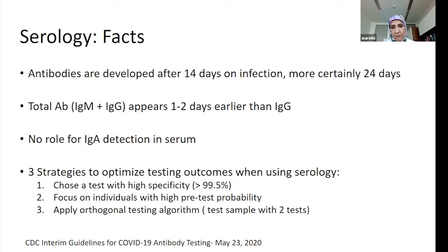Assays detecting IgA have no role to play in this disease. There are three strategies to optimize testing outcomes when using serology, as recommended by the CDC's interim guidelines. First, choose a test with the highest specificity — you really need specificity greater than 99.5%. Second, focus on individuals with high pretest probability — your high-risk groups likely to have been exposed or to have infection.